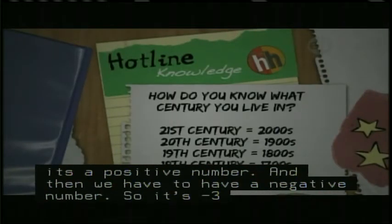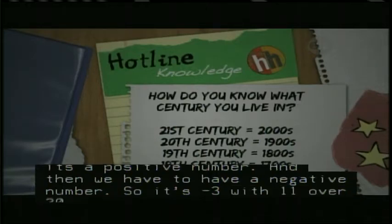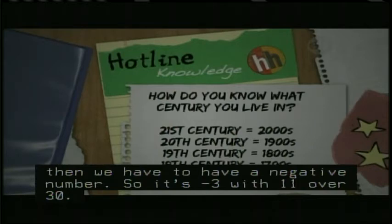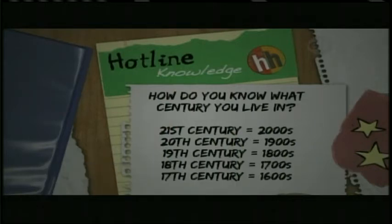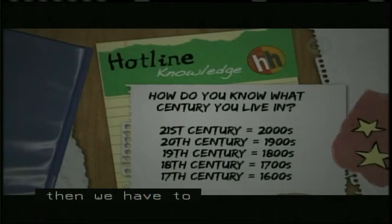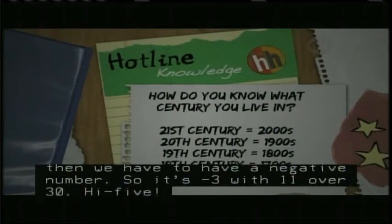How do you know which century you live in? The 21st century is the 2000s. The 20th century is the 1900s. The 19th century is the 1800s. The 18th century is the 1700s. The 17th century is the 1600s and so on.